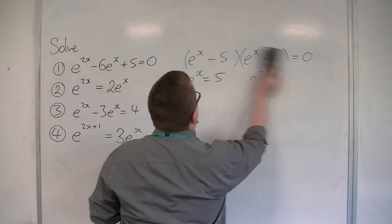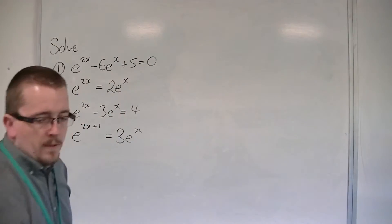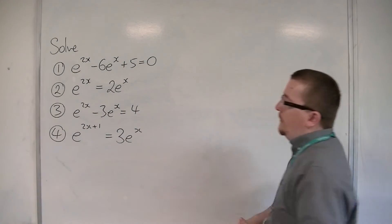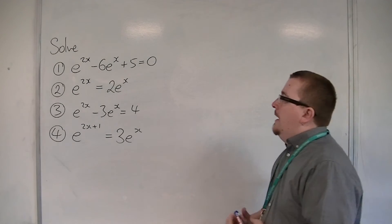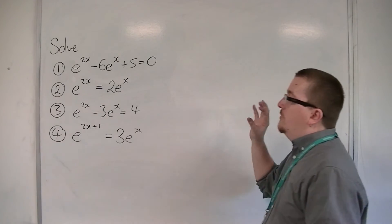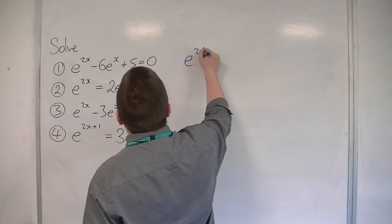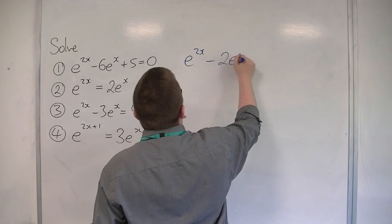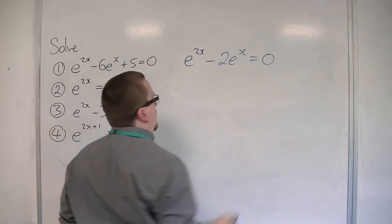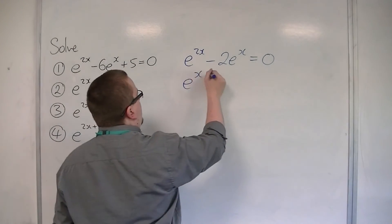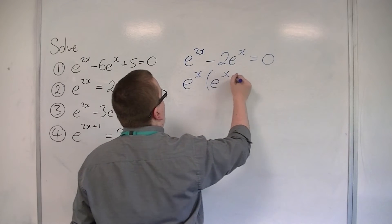Let's look at the second one. e to the 2x is equal to 2e to the x. What I'm going to do here is take 2e to the x onto the left-hand side first. So e to the 2x minus 2e to the x is 0. I'm then going to factorise the left-hand side, so I'll have e to the x times e to the x minus 2.